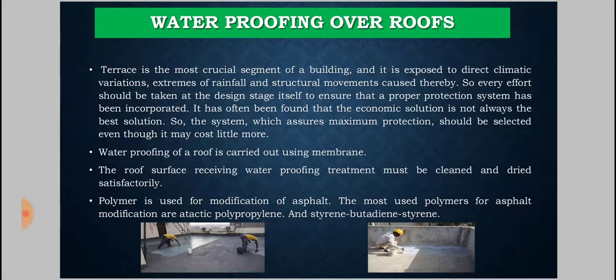As shown in the figure, waterproofing layers are provided on the roof surface to protect it from rainwater. Polymers are used for modification of asphalt; the most commonly used polymers for asphalt modification are atactic polypropylene and styrene-butadiene-styrene (SBS). Two to three layers of these chemicals are applied to create a protective layer on the roof surface, preventing water ingress.